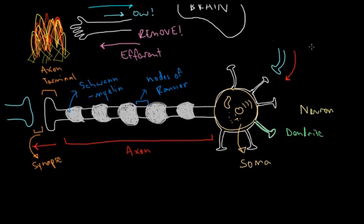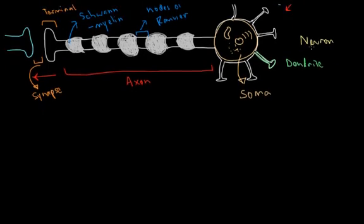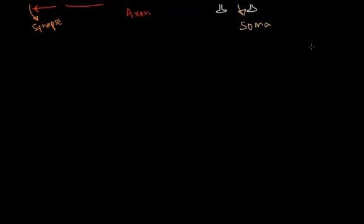So what happens when the signal reaches the axon terminal? How does it jump across the signal to the next neuron if they don't physically touch? Let's take a look at that now. So I'm going to go ahead and redraw our synapse that we saw above just a little bit bigger so that we can see all of the relevant details.